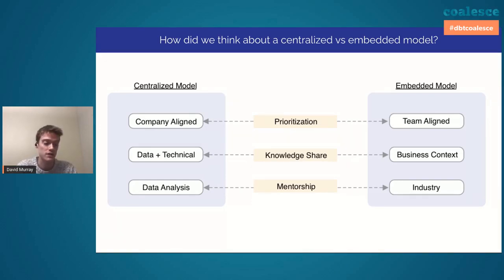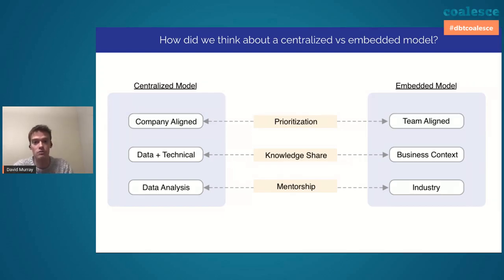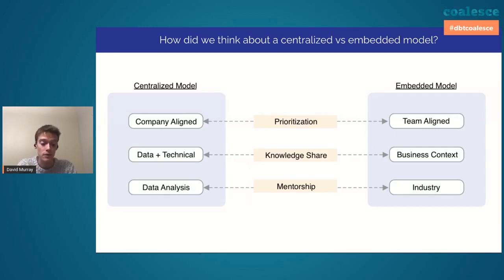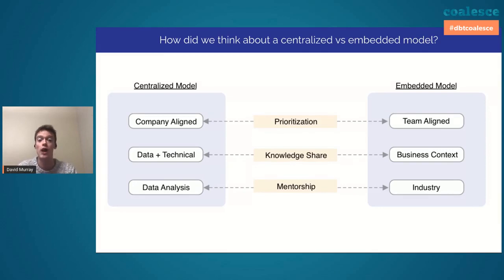That was great for the team because he was working on the highest priority team projects. The issue was that there were a ton of other teams that needed data help that weren't getting it. This was really the straw that broke the camel's back when it came to deciding to move to a centralized model — we could now prioritize things at a company level. The second trade-off is the idea of knowledge share. If you're a small growing team building out dbt, there's a lot of communication that needs to happen.